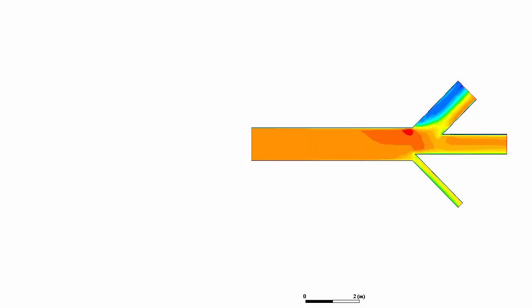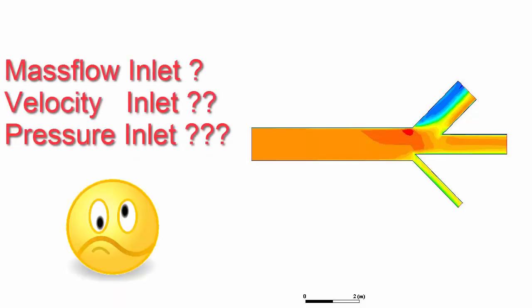Most of the new flow users feel confused about the usage of boundary conditions, especially while selecting the inlet boundary condition. Should I use mass flow inlet, velocity inlet, or pressure inlet?